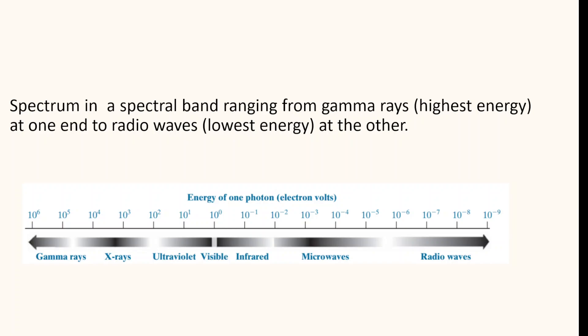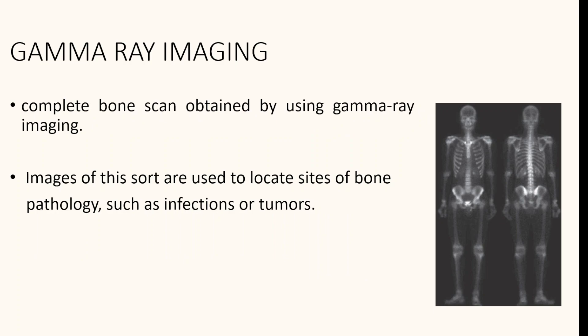Electromagnetic waves can be conceptualized as waves of varying wavelength, or as massless particles, each traveling in a wave-like pattern. Each massless particle contains a certain amount of photon energy. If spectral bands are grouped according to energy per photon, we obtain a spectrum ranging from gamma rays to radio waves.